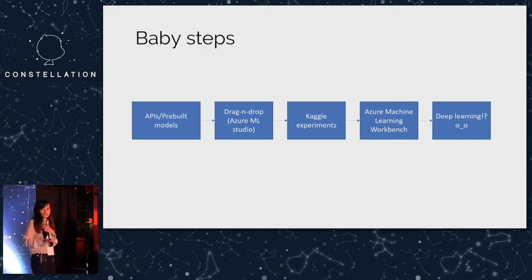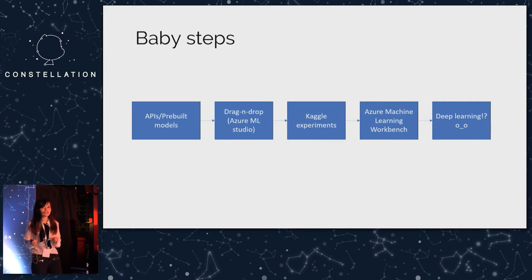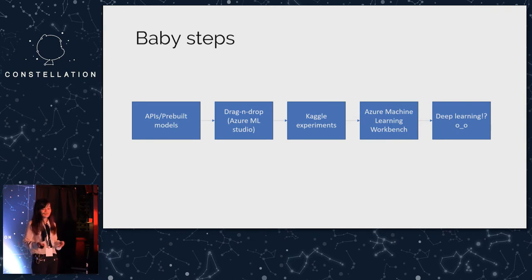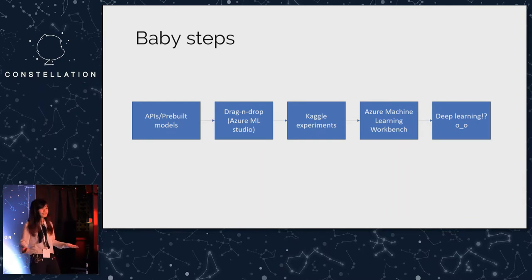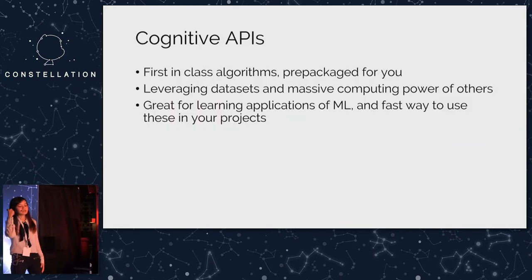Let's take some baby steps — this is modeled after the journey I took personally. I started with using cognitive APIs that Microsoft, Google, and IBM offer. Then drag-and-drop using Azure Machine Learning Studio, which I'll show later. Third, I did Kaggle experiments — Kaggle is so good for data, it will change your life. Then the Azure Machine Learning Workbench to operationalize your model, and lastly deep learning, which I'm still learning myself.